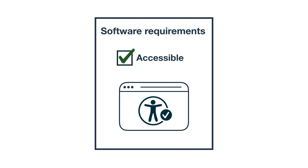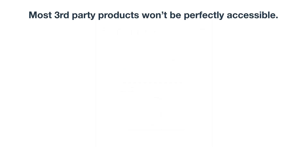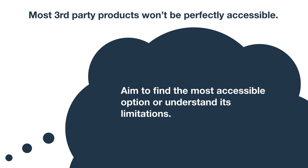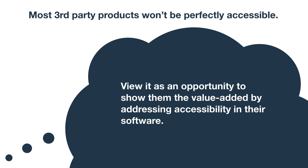That said, most third-party products won't be perfectly accessible. A good mindset to approach the conversation with is: first, aim to find the most accessible option or understand its limitations. Second, view it as an opportunity to show them the value added by addressing accessibility in their software. This could get accessibility on the vendor's radar and make it a priority for them too.